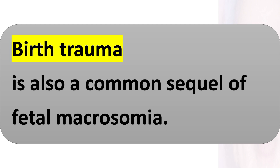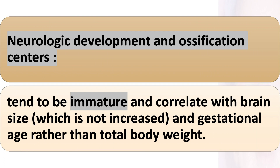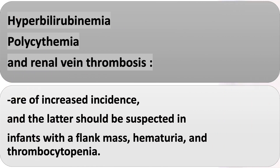Birth trauma is also a common sequel of fetal macrosomia. Neurologic development and ossification centers tend to be immature and correlate with brain size, which is not increased, reflecting gestational age rather than total body weight. Hyperbilirubinemia, polycythemia, and renal vein thrombosis are of increased incidence. Renal vein thrombosis should be suspected in infants with a flank mass, hematuria, and thrombocytopenia.